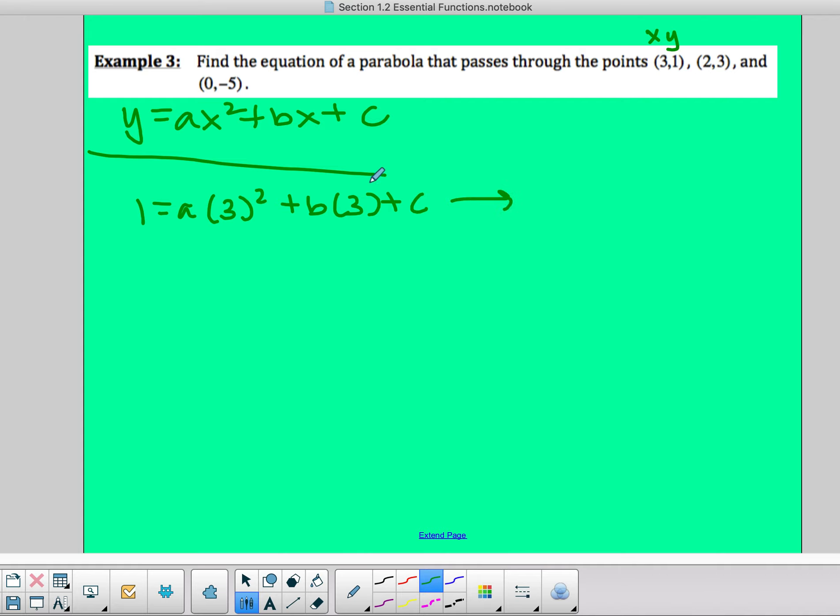And I'm just going to simplify this, and I'm going to write this part first, and then equals one. So three squared is nine, so I got nine a plus three b plus c equals one.